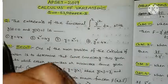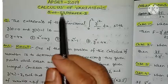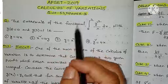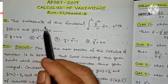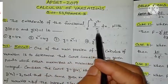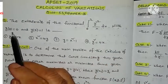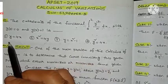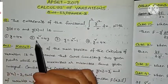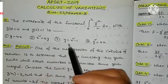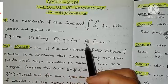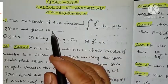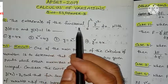Hi everyone, this is Ram Krishna, welcome to my channel. In this video we will discuss EPISODE 2019 Calculus of Variations questions number 53 and 54 from Paper 2. The question is: find the extremals of the functional integral from 0 to 2 of y-dash squared divided by x dx, with initial conditions y(0) = 0 and y(2) = 1. The four options are: (1) y = 4x, (2) x² = 4y, (3) y = x² - 1, (4) y² = 4x.